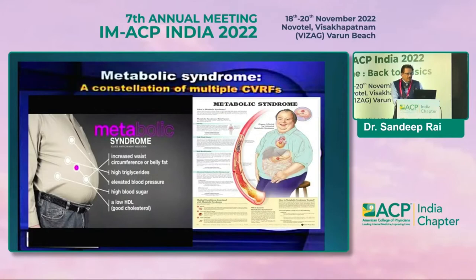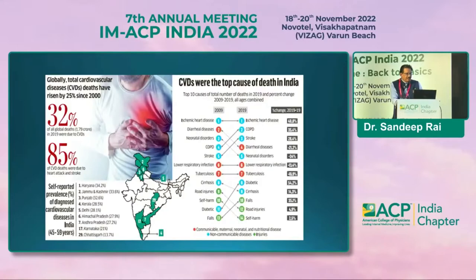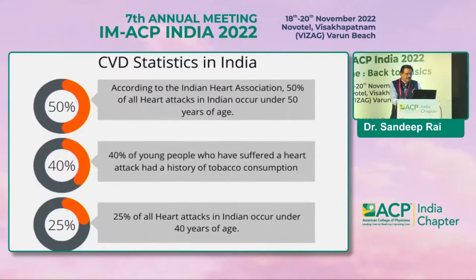Starting from metabolic syndrome, we know it's a constellation of multiple cardiovascular risk factors, and all these risk factors come on the background of insulin resistance — that's the common soil. It gives rise to cardiovascular diseases and type 2 diabetes. Cardiovascular diseases are the top cause of death in India, with about 40% of people dying due to cardiovascular diseases, and this is a slide entrenched in our minds.